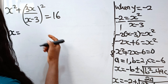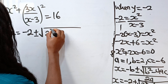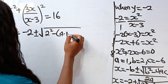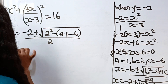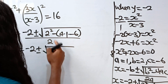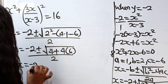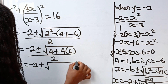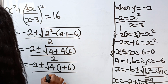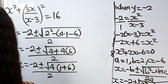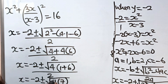Continuing: x equals minus 2 plus or minus square root of 4 minus 4 times 1 times minus 6, all divided by 2 times 1. That gives minus 2 plus or minus square root of 4 plus 24, divided by 2 — simplifying to minus 2 plus or minus square root of 4 bracket 7, divided by 2.